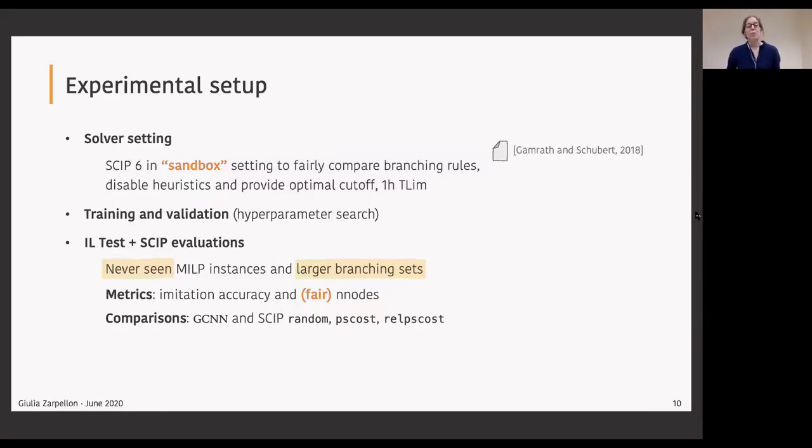We test our policies both in terms of their imitation accuracy, how accurate they are at the imitation task, but also in terms of optimization performance. We plug them in SCIP as custom branching rules and we do multiple runs on our instances. In these runs we will be interested in checking how many nodes are explored in the tree, and also in computing for SCIP default rule the fair number of nodes, which is a node count that takes into account the side effects from strong branching, a number that can be meaningfully computed in the sandbox setting.